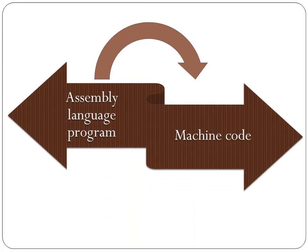We can also say that an assembler is a translator that translates programs of assembly language into machine code. All programs written in assembly language are converted into machine code, or into the form of 0 and 1, using an assembler.